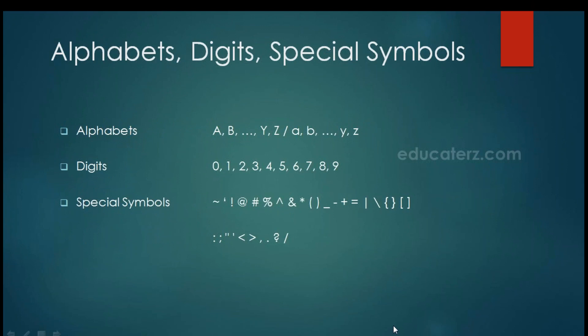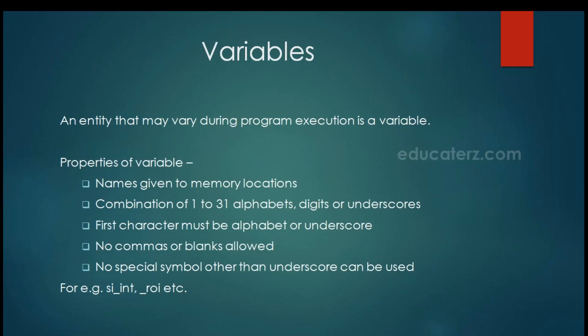You can see the special symbols in this PPT. Now, what is a variable? A variable is an entity that may vary during program execution. Basically, we can give a name to a memory location using a variable. There are some rules for naming a variable: the name should be a combination of 1 to 31 alphabets, digits, or underscores. The first character must be an alphabet or underscore — a digit is not allowed. Commas or blank spaces are not allowed, and no special symbol other than underscore can be used.